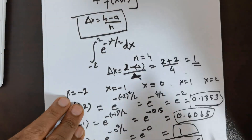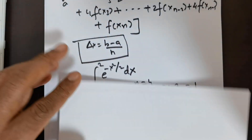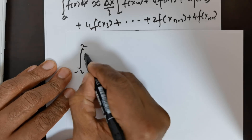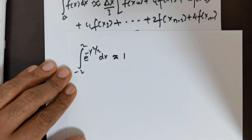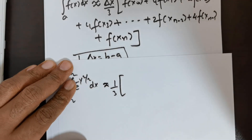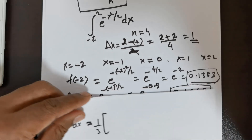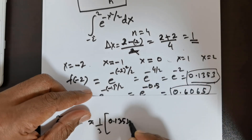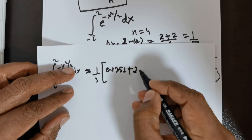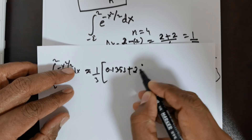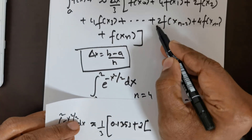So let me substitute these values into the formula. Delta x is 1. So the integral from negative 2 to 2 of e to the power of negative x squared over 2 dx is approximately 1 divided by 3 times the sum. f(x₀) is the first entry, f(−2) = 0.1353. Now the even entries are multiplied by 2 and the odd entries by 4.